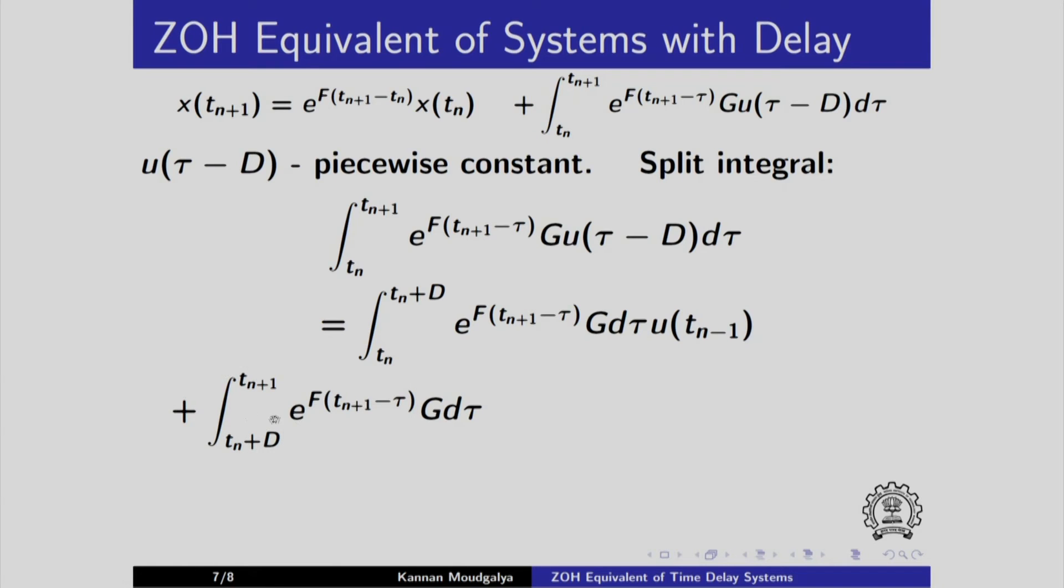Now the next interval tn plus d to tn plus 1 and here we need to multiply by u of tn. So now we have this expression multiplied by u of tn minus 1 and then u of tn multiplying some other expression. So we would call this as b1 into u of tn minus 1 plus b0 into u of tn.